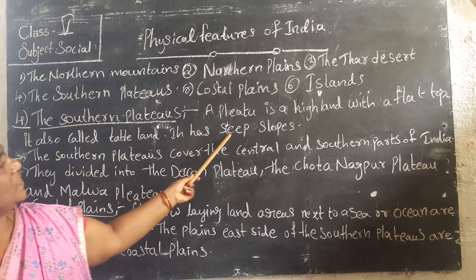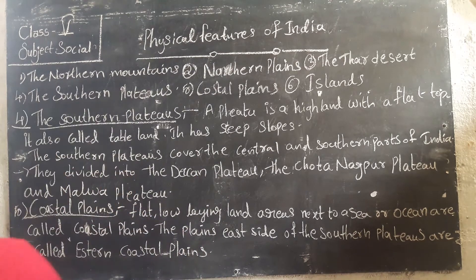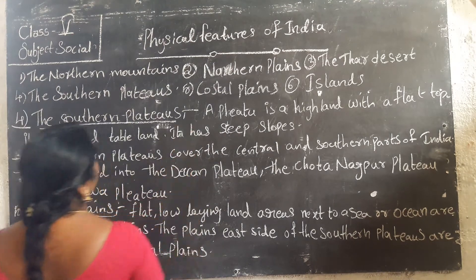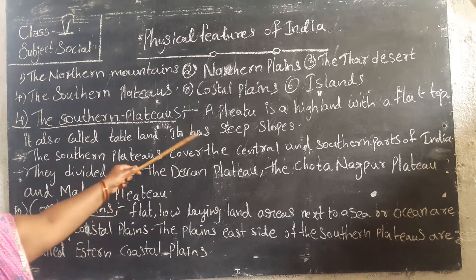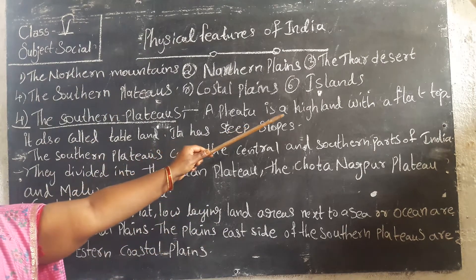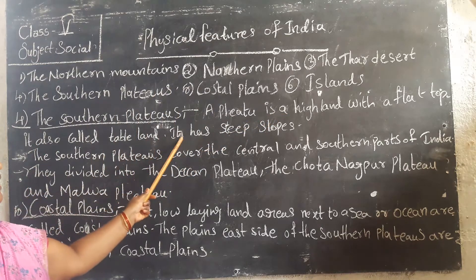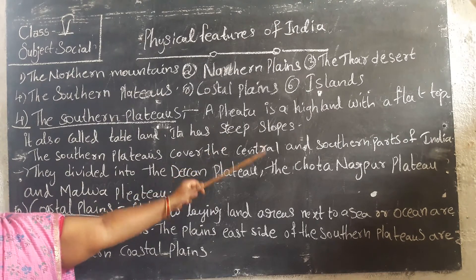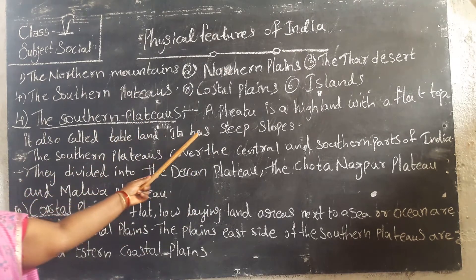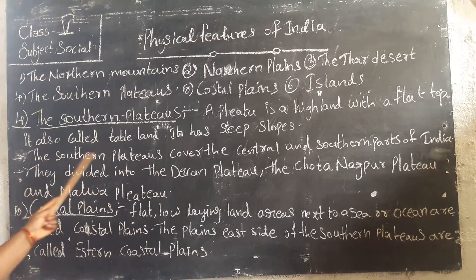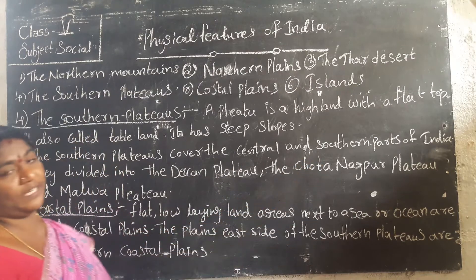It has steep slopes. The plateau is a high land with a flat top. It is also called table land. It has steep slopes. The Southern Plateau has steep slopes.